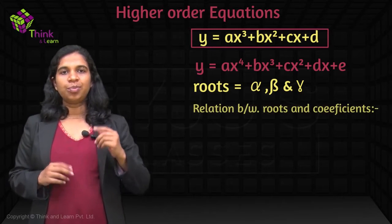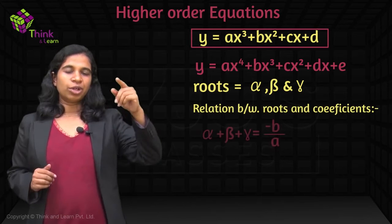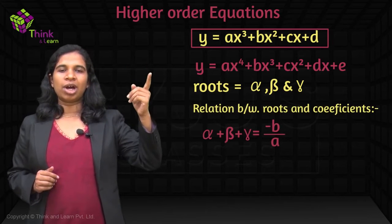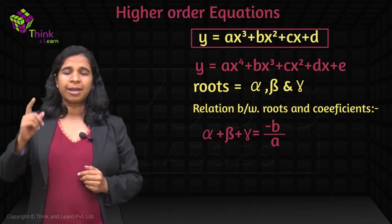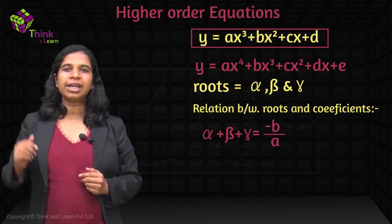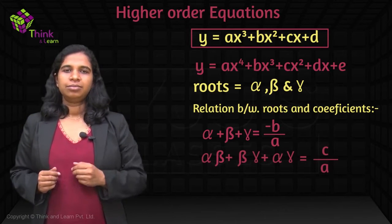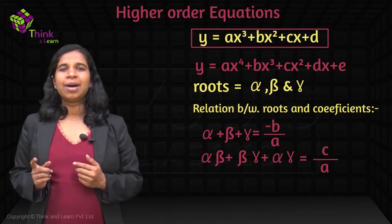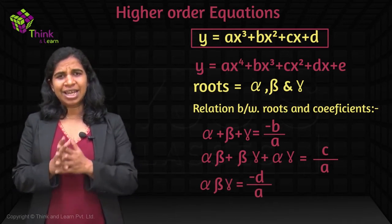You know the relationship between the coefficients and the roots. If you take the sum of the 3 roots one at a time, alpha plus beta plus gamma, that is minus B by A. Two at a time, C by A. Three at a time, minus D by A. We've already seen this.